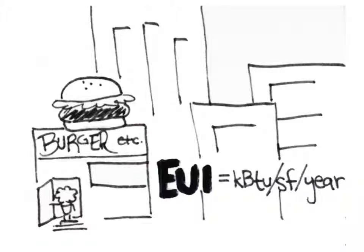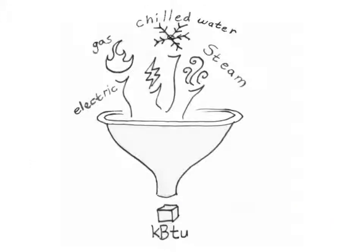EUI measures in KBTU per square foot per year. It's a common unit we can use to compare building energy use regardless of the energy source. Gas, electricity, chilled water, steam. It all gets converted to KBTU.